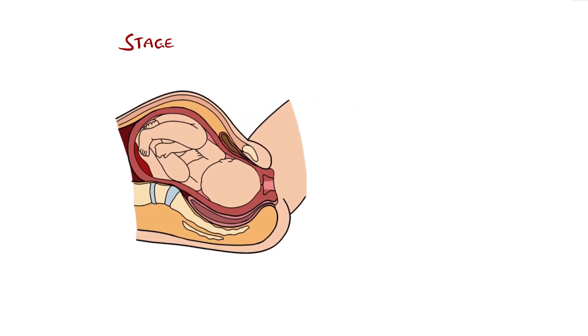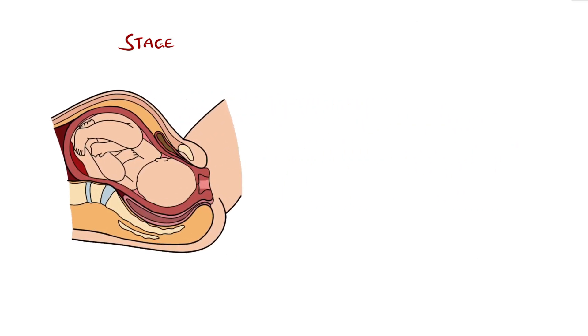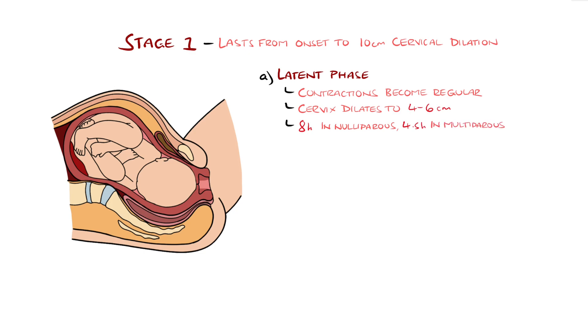The first stage is divided into two parts, lasting from the onset of labor to the cervix reaching 10 cm dilated. First is the latent phase, where contractions are irregular but become regular, featuring mild discomfort as the cervix dilates to around 4-6 cm. The mean in nulliparous mothers is around 8 hours, while this is around 4.5 in multiparous mothers.